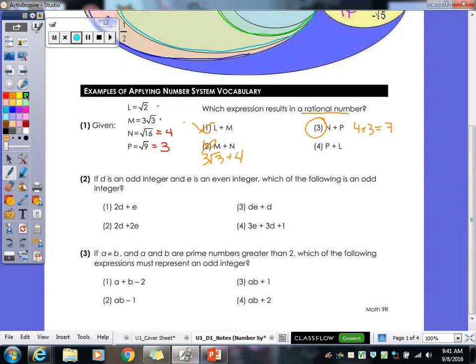Alright, two, D is an odd integer, E is an even, which of the following is an odd integer? So with these ones, easiest thing to do is pick a number for each of the letters. So somebody give me an odd integer for D? One. Odd integer for E? Four. So we're going to plug them into each of our choices, see which one gives us an odd integer, that's what we're looking for.